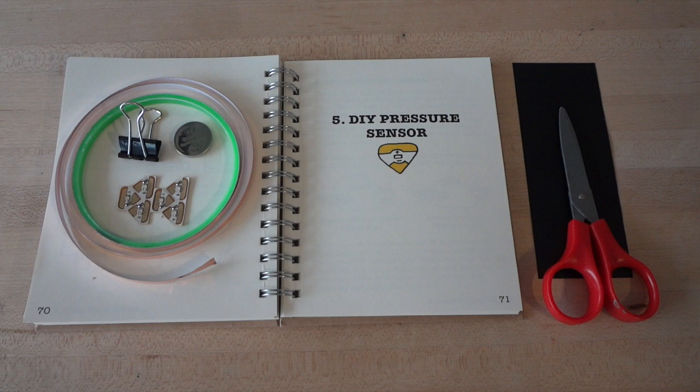For this tutorial, you will need the pressure-sensitive plastic sheet, one LED circuit sticker, a coin cell battery, a binder clip, conductive foil tape, and scissors.